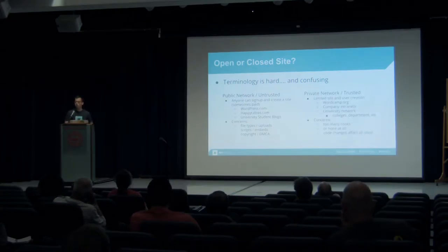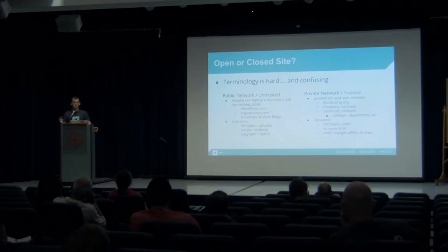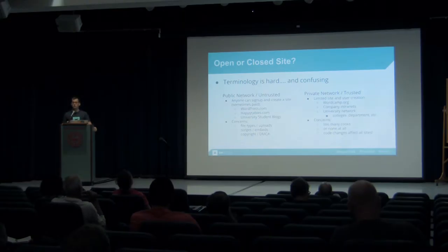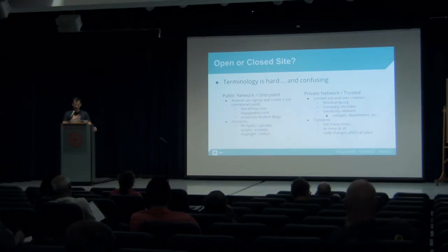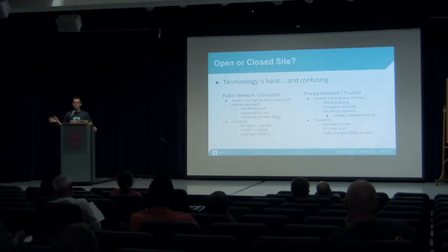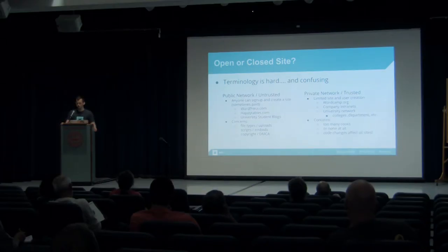The other kind is a private network, also called a trusted network, with limited site and user creation — you have to grant someone the ability to do things. A great example is WordCamp.org, where trusted members of the WordPress community can create WordCamps in a central location with a central domain name and management system. Another great example is company intranets — most of my multisites are for companies that never expose them on the public internet, giving each department their own website. University networks are also compelling — allowing a main flagship property and giving every college, department, or school their own custom website, all managed in one place by sysadmins.